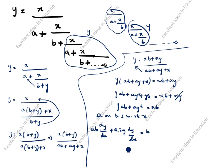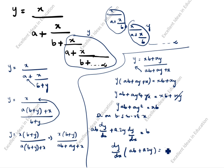Differentiating both sides with respect to x: dy/dx is common, we take it outside — dy/dx times (ab + 2ay) equals b. Therefore dy/dx equals b divided by (ab + 2ay).